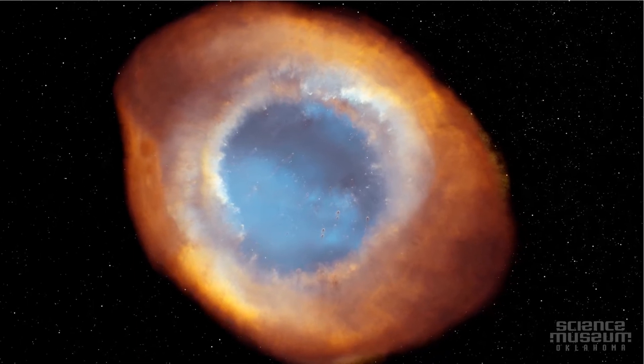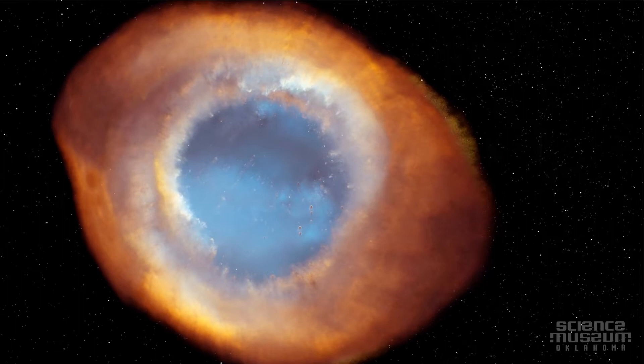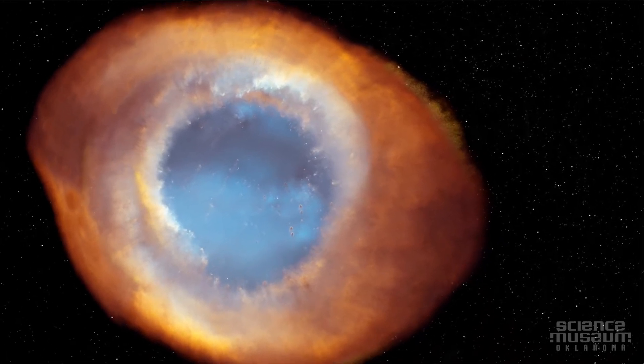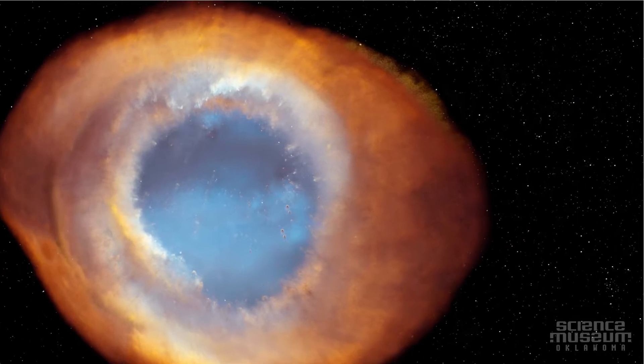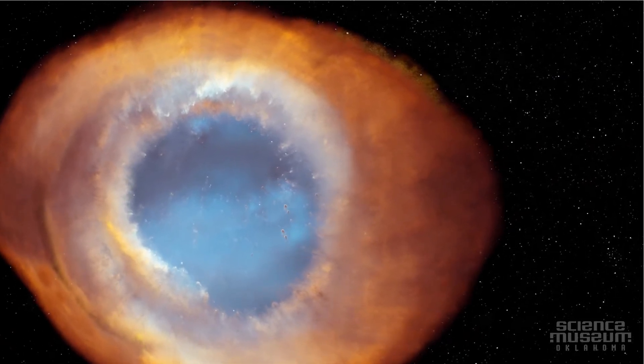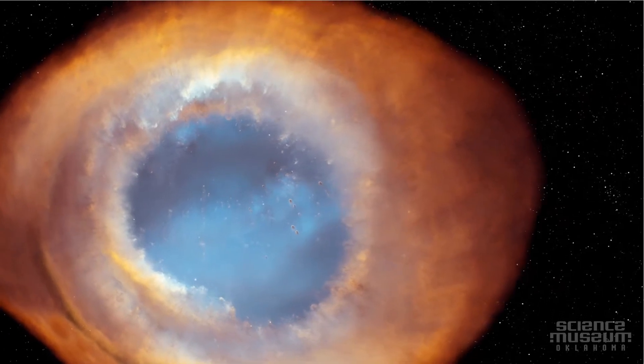Here we encounter a vast ring of glowing gas, the remnants of the death of a sun-type star and appropriately called the ring nebula. These types of nebulas are called planetary because they normally appear round with a blue color, like a planet in a telescope.